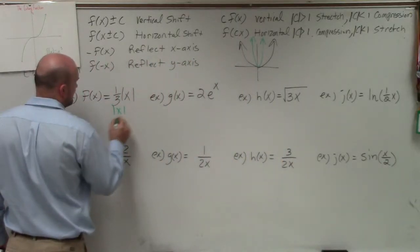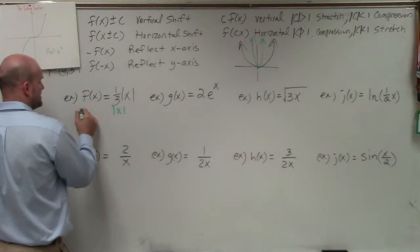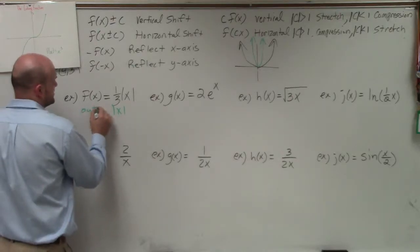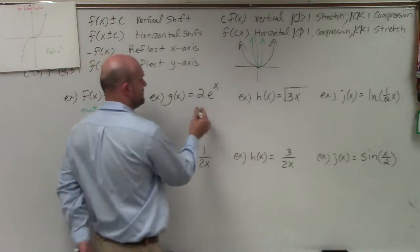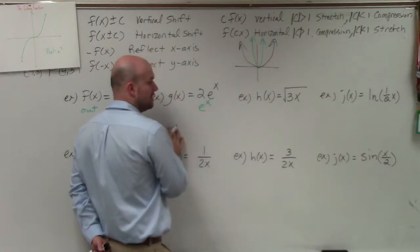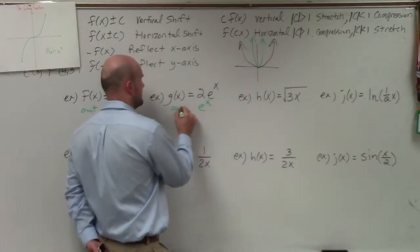Parent function over here is absolute value of x. Am I multiplying it on the outside or the inside? Outside. I'm just going to write outer in. The parent function here is e to the x. Am I multiplying inside or outside? Outside. Outside.